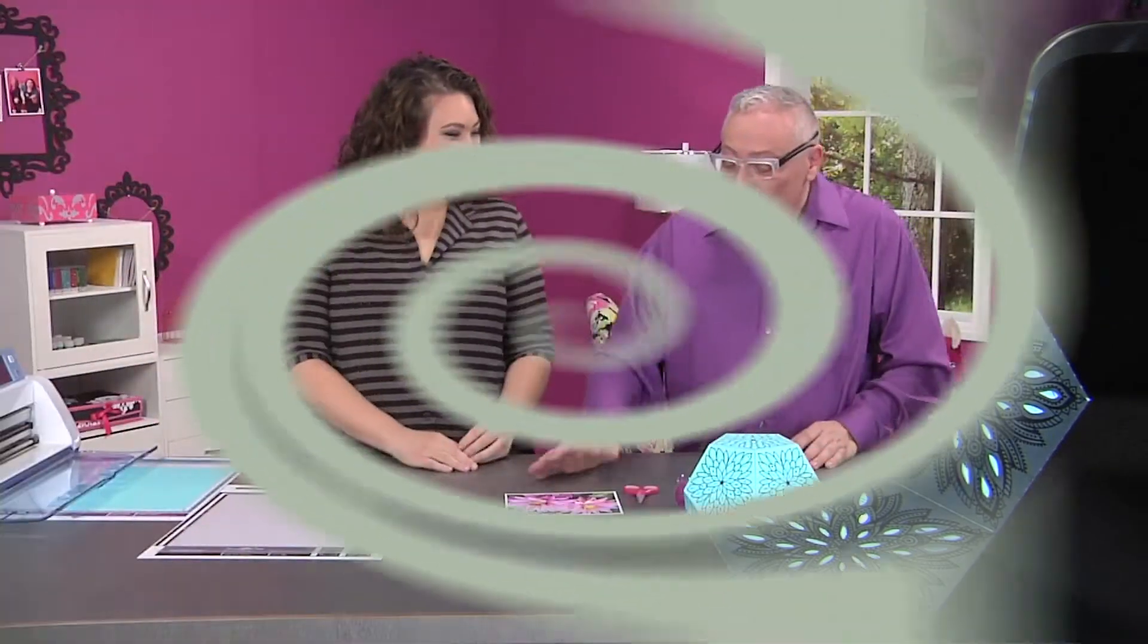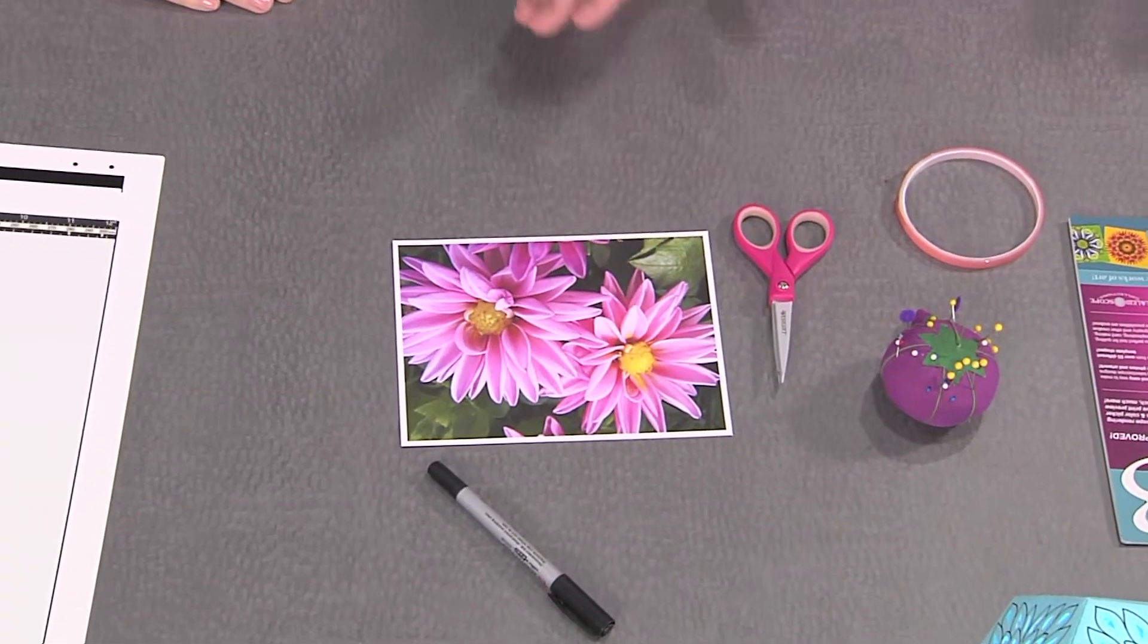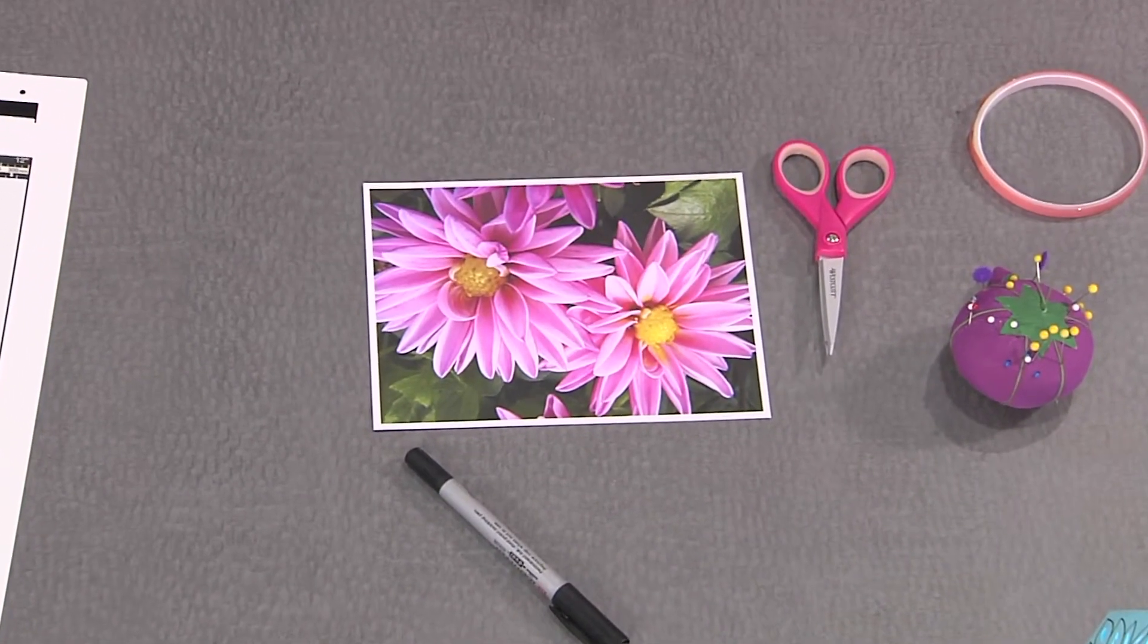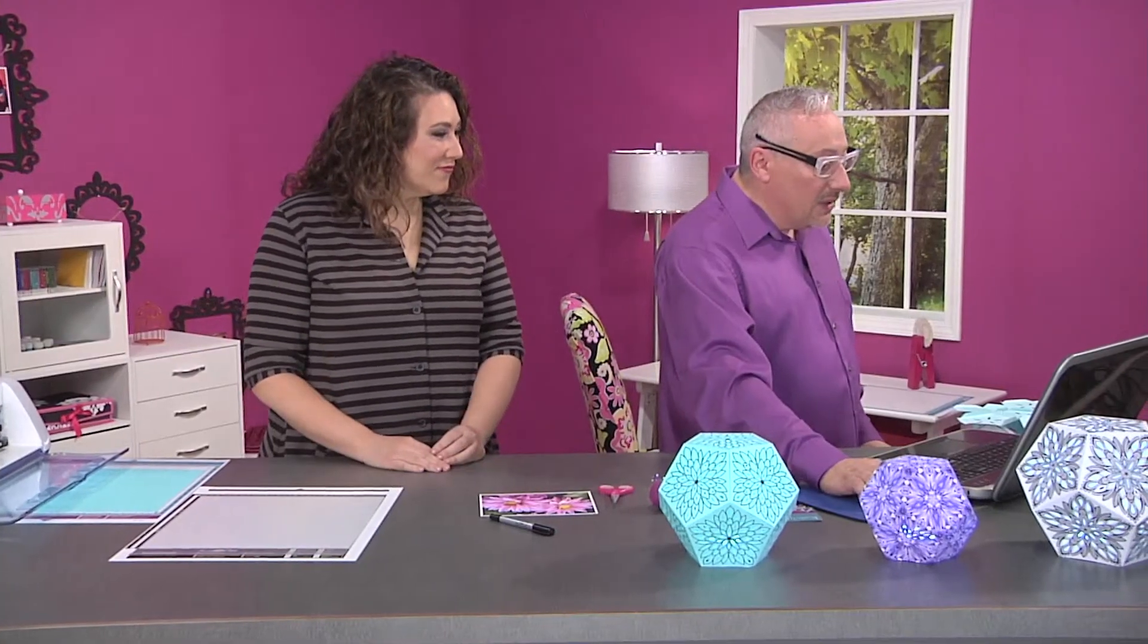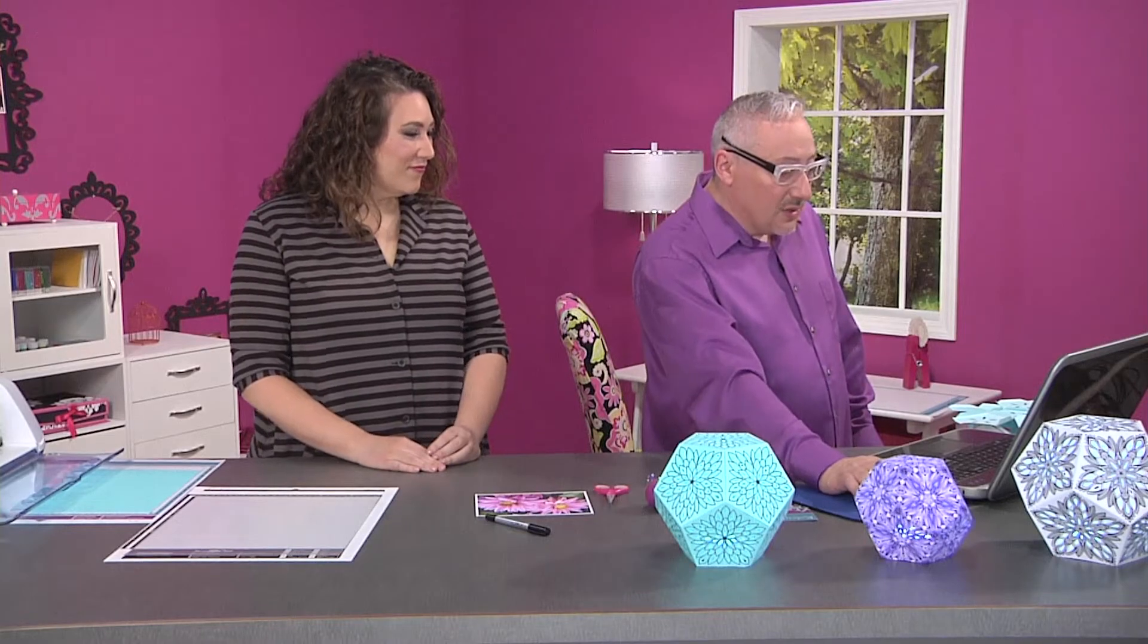They are. I'm going to show you how. We start out with a photo, and in this case we chose flowers because they have a nice shape that works well in our kaleidoscope software. We scanned that in, and now let's bring up the software and I'll show you how easy it is to make a kaleidoscope out of this.